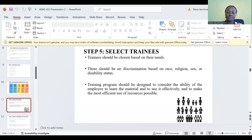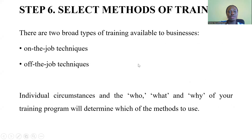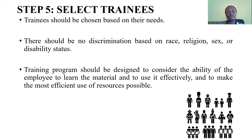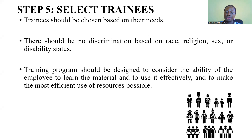I'll share my screen with you and then we can go through together. So in the strategic training process, the first step is selecting trainees. The trainees are one of the stakeholders that are very, very important. It's crucial to choose the right trainees for the training program, in the sense that it's not everybody in the organization who needs the training that you're offering at the time.